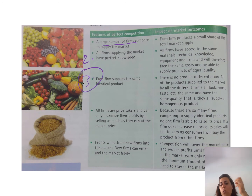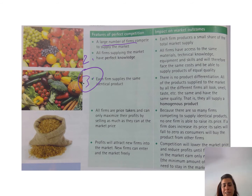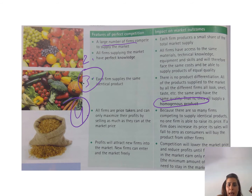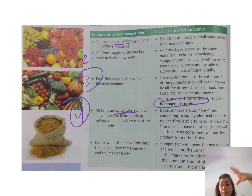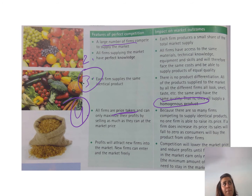Firms that compete are producing similar products. When talking about similar products that are not differentiated, we call these homogeneous products. In competition, firms are considered price takers — they take the price as it is in the market. Because if I increase the price, I'm competing with thousands of firms, and people will stop buying from me and go to the other competitors.